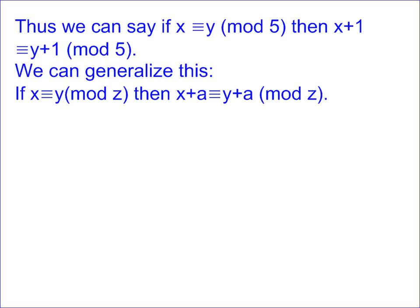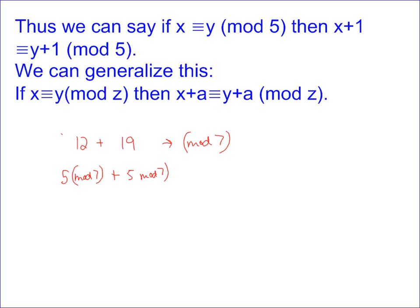For instance, if we've got twelve plus nineteen and want to find the solution mod seven, there are two ways to do it. One way is to convert each to mod seven first: five mod seven plus five mod seven gives ten mod seven, and ten mod seven is equivalent to three mod seven. So the mod seven solution to twelve plus nineteen is three mod seven. Or you could have done thirty-one and then changed thirty-one to mod seven and gotten three mod seven.